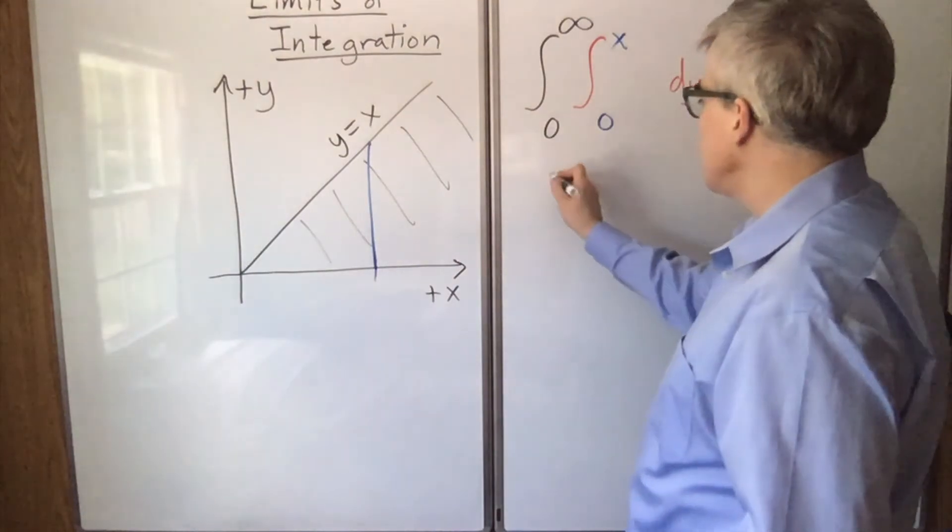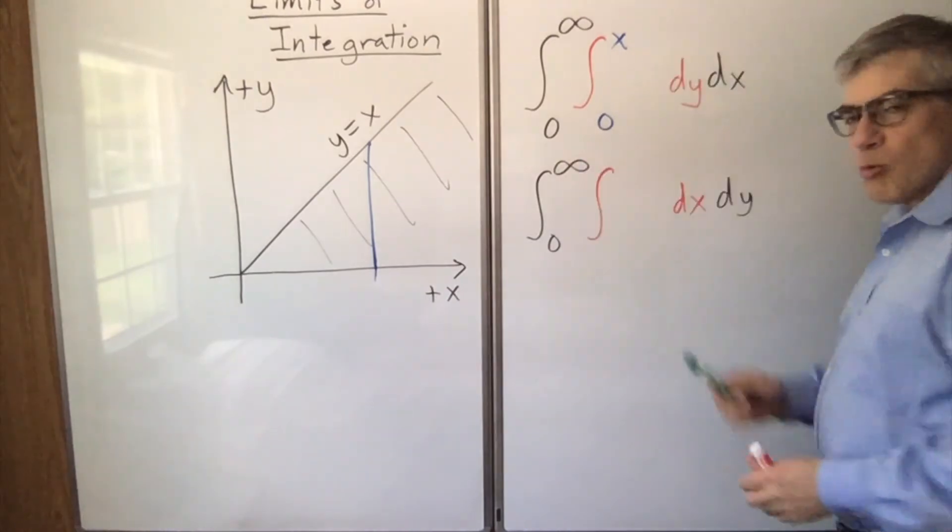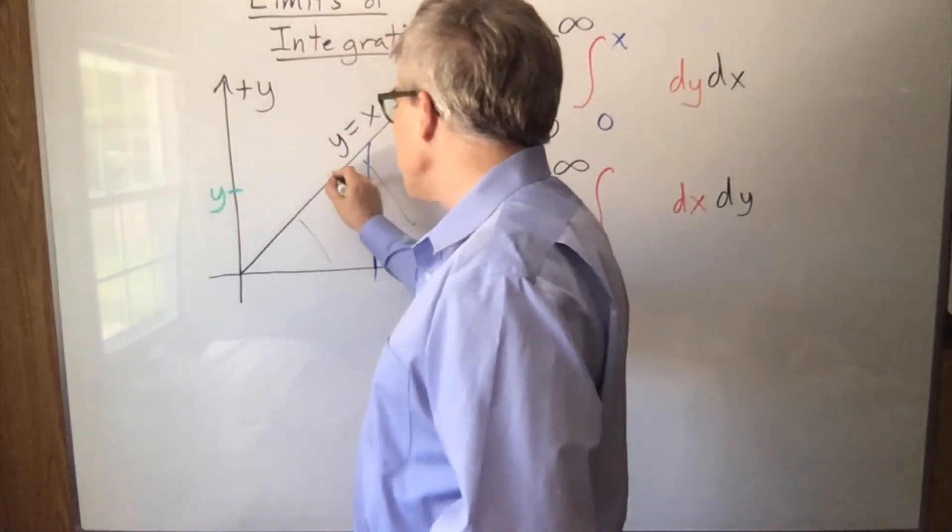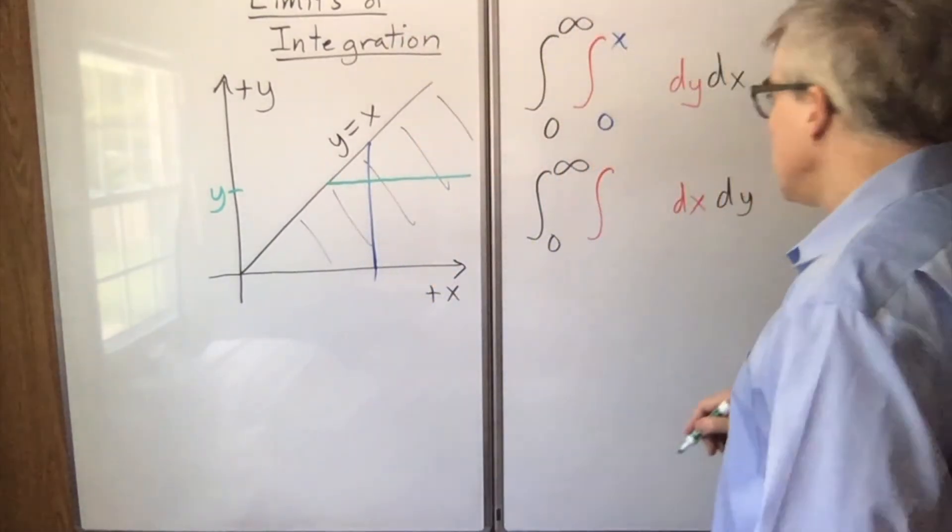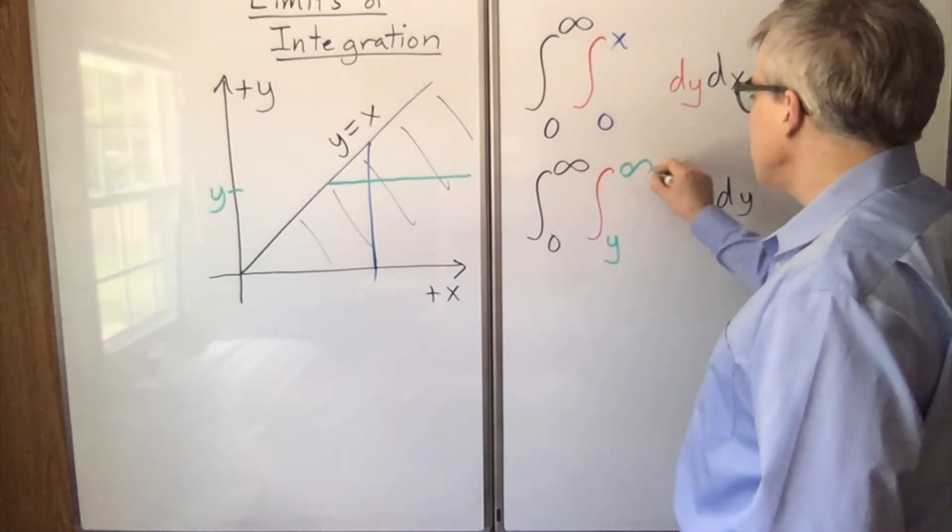If we want to integrate in the other order, y is going to range from 0 to infinity. What will be the range for x? For a given y value, we start here and we go infinitely to the right, which means that x starts out equal to y and goes to infinity.